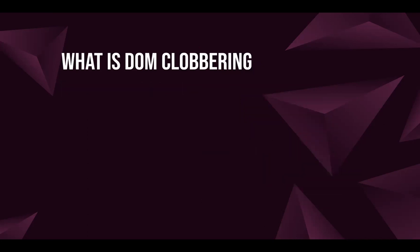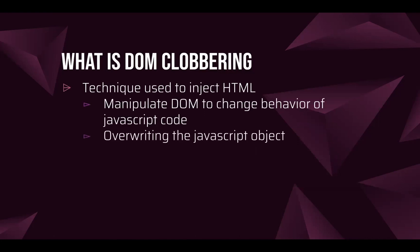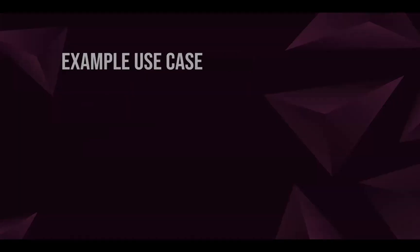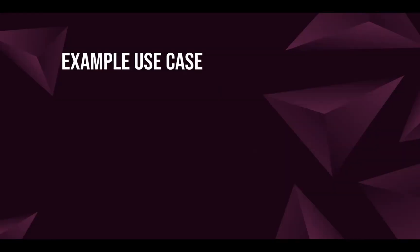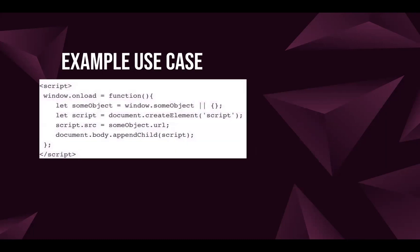Now we're going to move on to DOM clobbering. What is DOM clobbering? It's a technique used to inject HTML onto the client side, meant to manipulate the DOM in order to change the behavior of JavaScript code. For example, you can overwrite any JavaScript object that's inside the script tag.